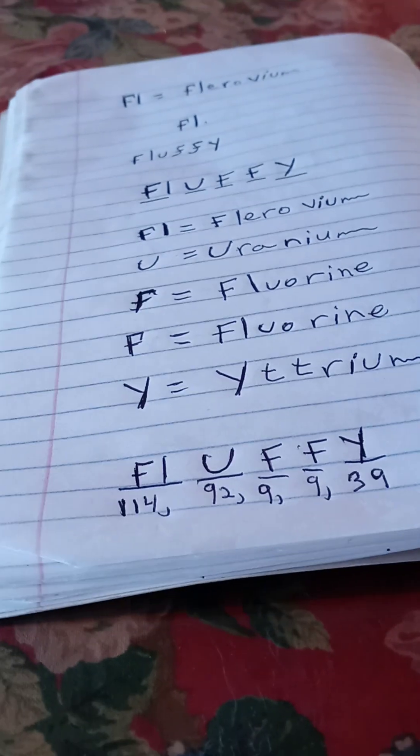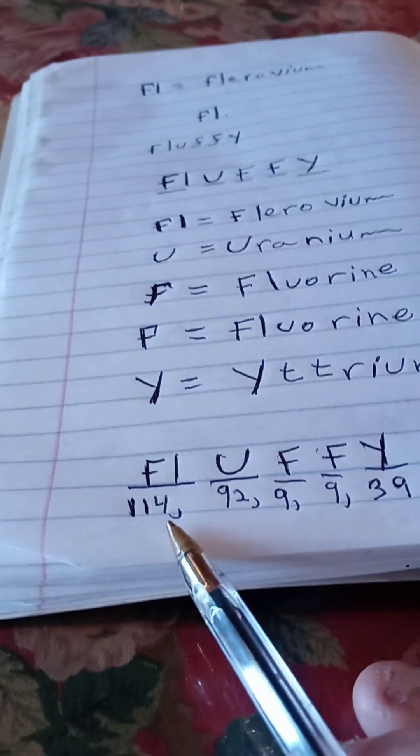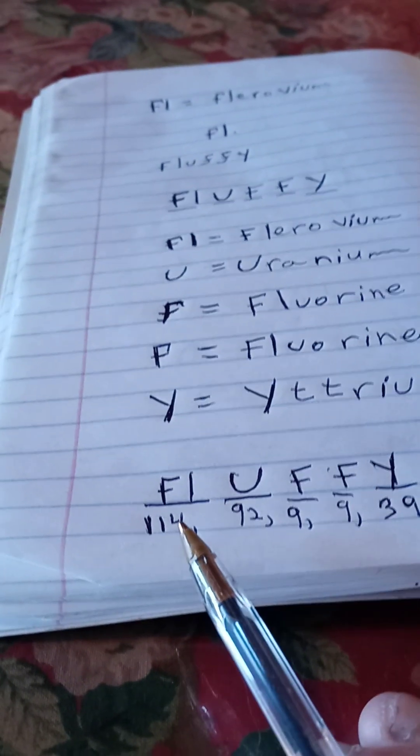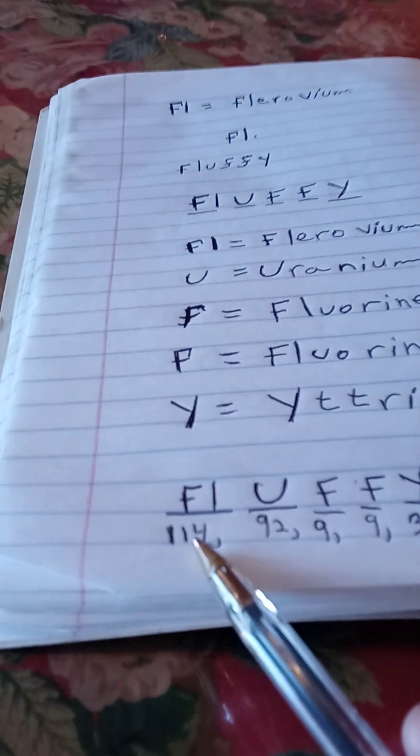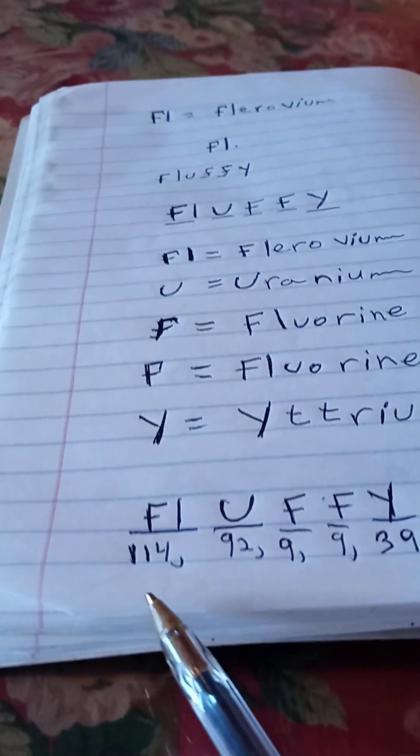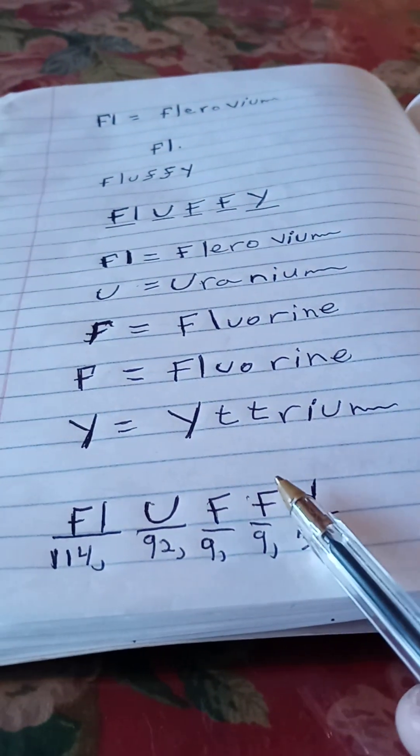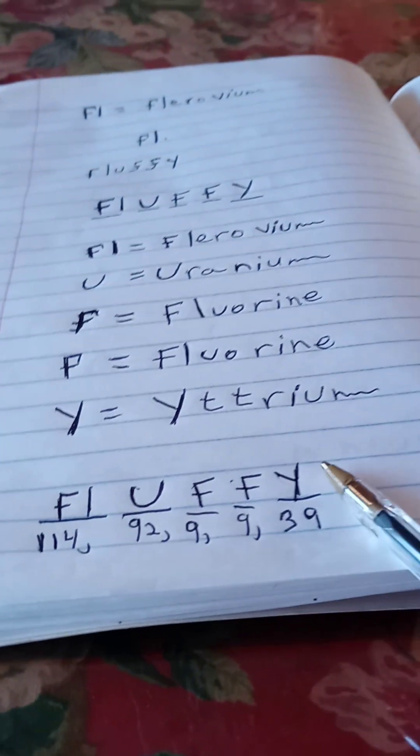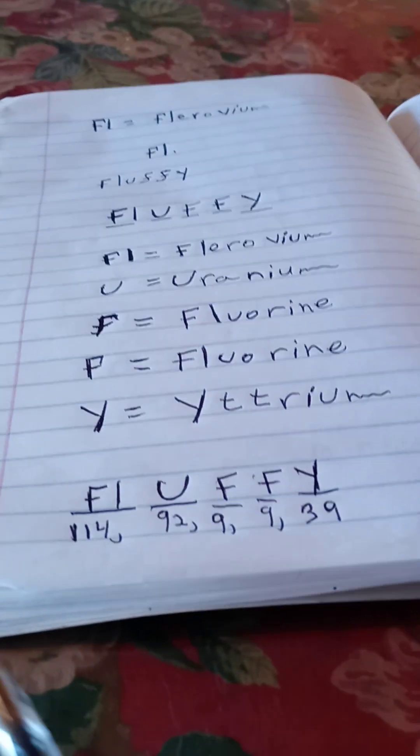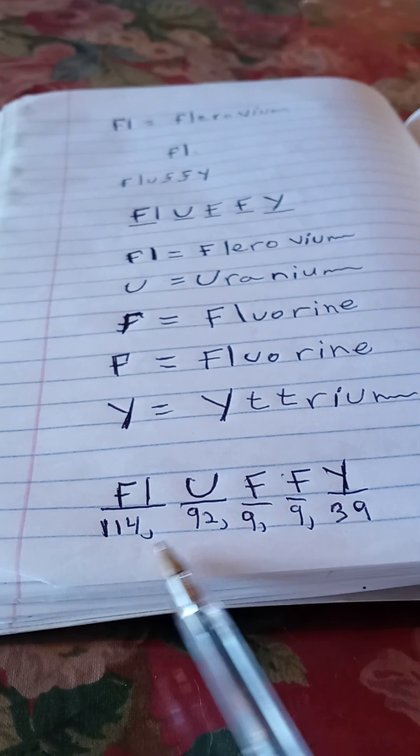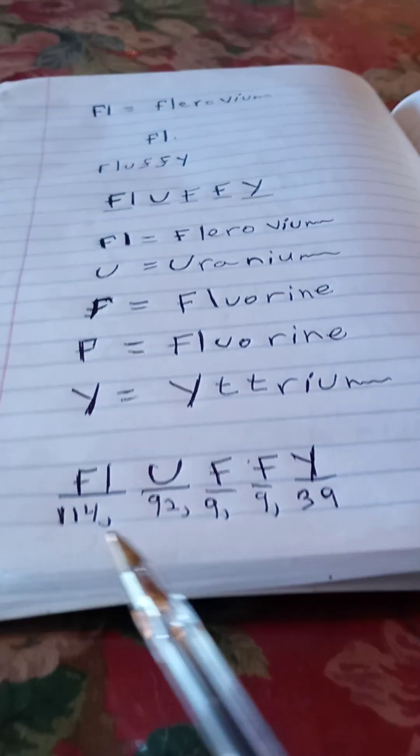Now in case you want to know the atomic number, here it is down here for Fluffy. Flerovium is 114, the atomic number, it's synthetic. Uranium is atomic number 92. Fluorine is 9, another capital F for Fluorine is 9, Yttrium is 39. Ooh, a lot of 9's, right? So there you go. 114 atomic number for Flerovium, Uranium is 92, Fluorine is 9, Fluorine is 9, Yttrium is 39, and there's the atomic number.